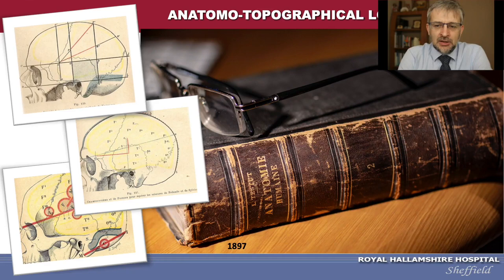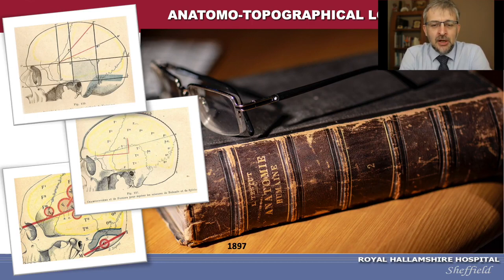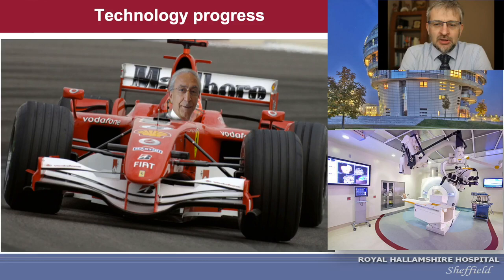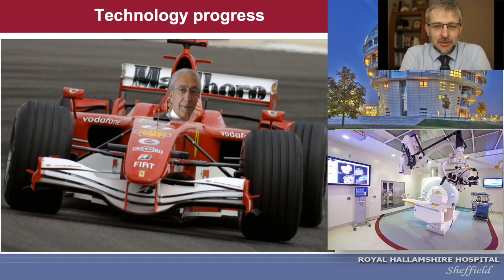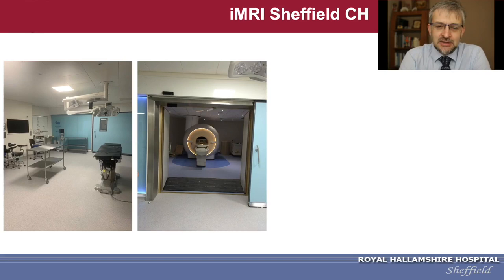On one hand we should have the most important thing: anatomical knowledge. These photos are from one of my books, probably more than 120 years old. The senior generation of neurosurgeons can recognize the lines of Kronlein, Championier, and Poirier. If you know these lines described so many years ago, you already will do a really good job.